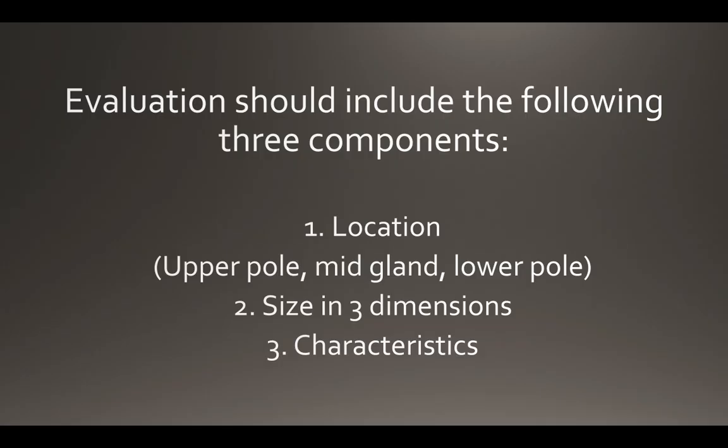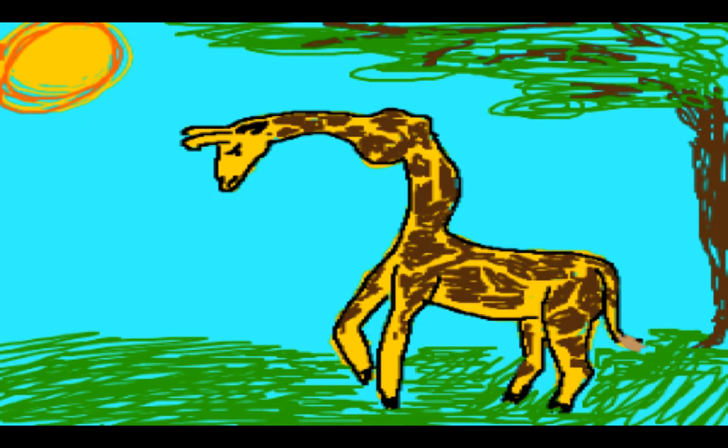Those are just some of the characteristics that can help determine whether a patient needs an FNA or if they can just be monitored. Any time you evaluate a nodule as a sonographer, you need to include three components in the description: the location of the nodule within the thyroid gland, the size in three dimensions — easily accomplished using the calipers on your ultrasound machine — and the characteristics of the nodule, many of which we just covered. That is it for now. Happy scanning, and don't forget — start at the sternal notch.